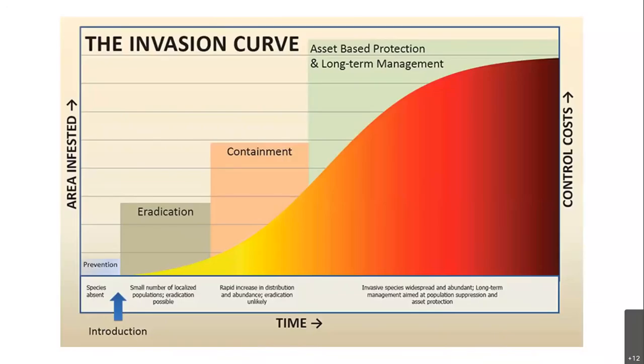Eventually an invasive species will build its population to a point where you can't eradicate it anymore. At that point the strategy will be containment — you want to contain the infestation and prevent it from spreading to uninfested areas. The main idea is that the earlier we are on the invasion curve, the better off we are, so we really want to focus our efforts as early on the curve as possible.